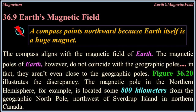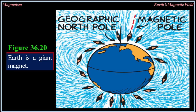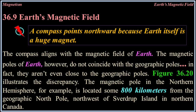36.9 Earth's magnetic field. A compass points northward because Earth itself is a huge magnet. The compass aligns with the magnetic field of Earth. The magnetic poles of Earth, however, do not coincide with the geographic poles — they aren't even close to the geographic poles. The magnetic pole in the northern hemisphere is located some 800 kilometers from the geographic north pole, southwest of Sverdrup Island in northern Canada.